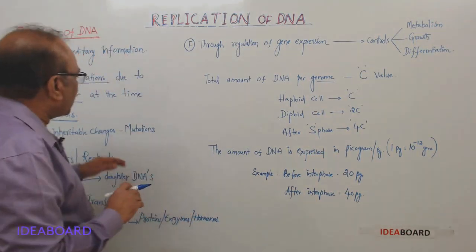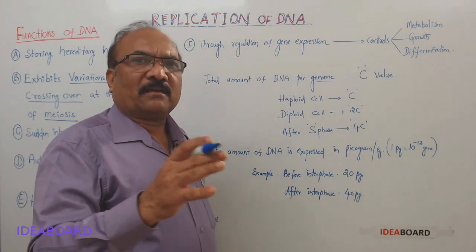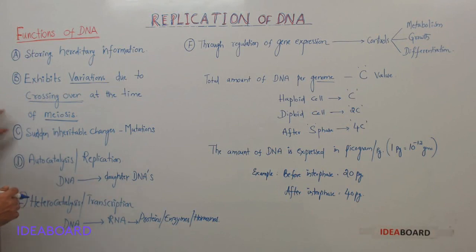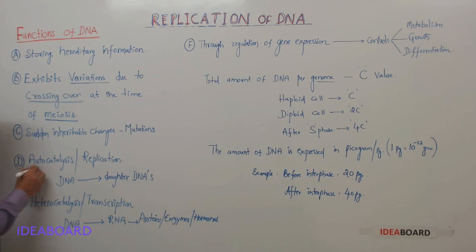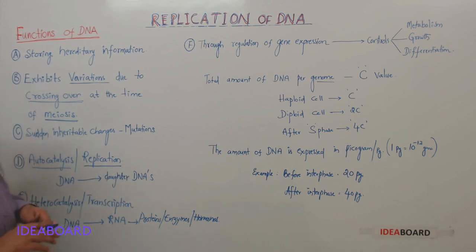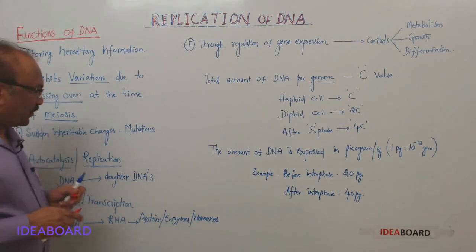That aspect will be discussed separately under the topic of mutations. The next and most important function is auto-catalysis, which is also called replication. Auto means self, so this can also be called self-duplication.